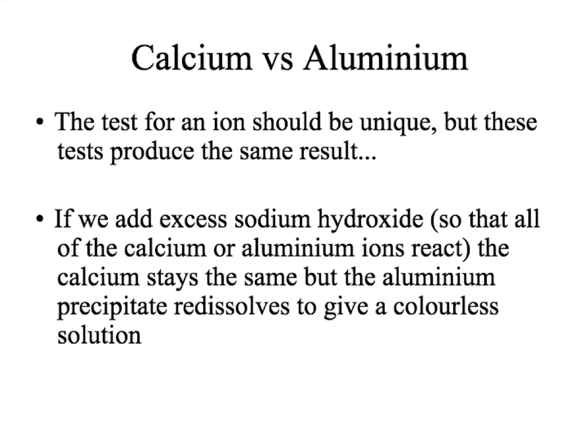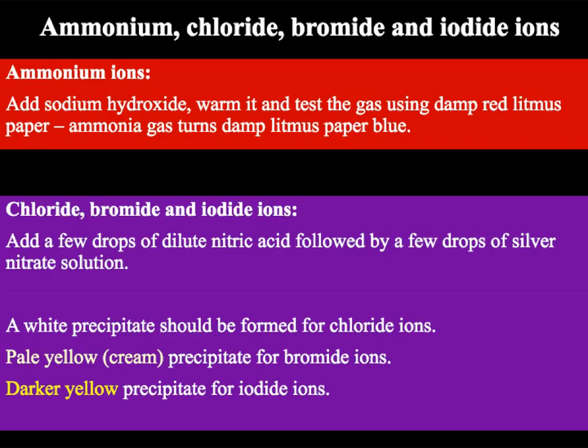As we looked at on the previous slide, the test for the ion should be unique. However, both calcium and aluminium form this distinctive white-coloured precipitate. But as we also looked at, when you have excess sodium hydroxide present, the aluminium hydroxide ions will re-dissolve and therefore will return to being a colourless solution — the precipitate will dissolve. This means that we can test if we have calcium ions or if we have aluminium ions. However, we do not only need to test for metal ions; we also need to be able to test for the anions as well.